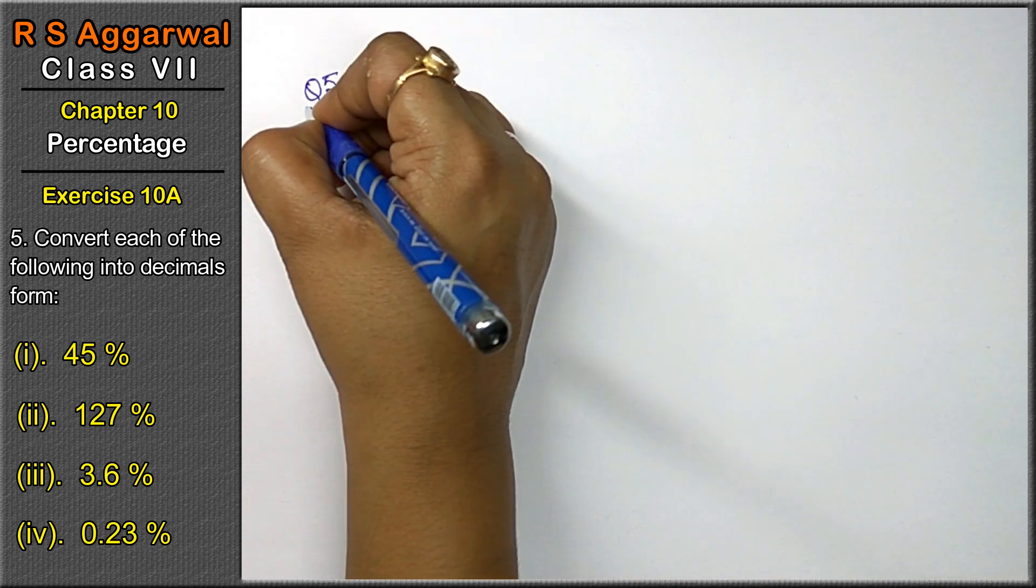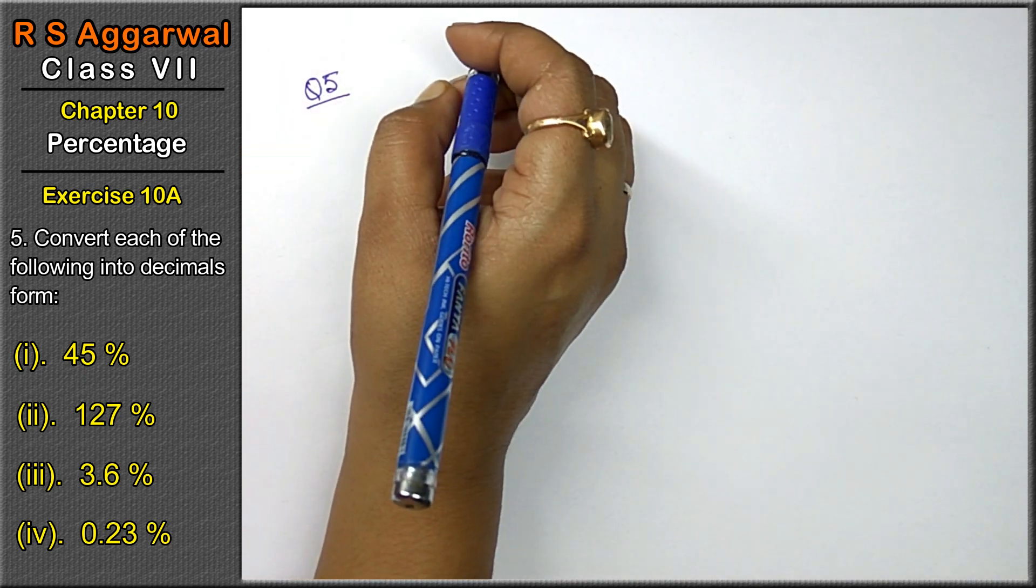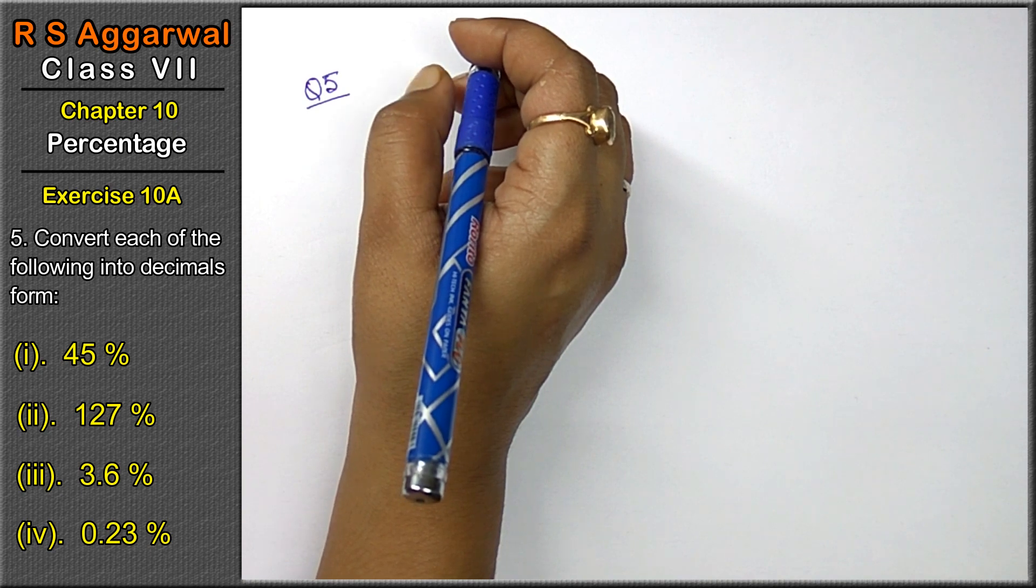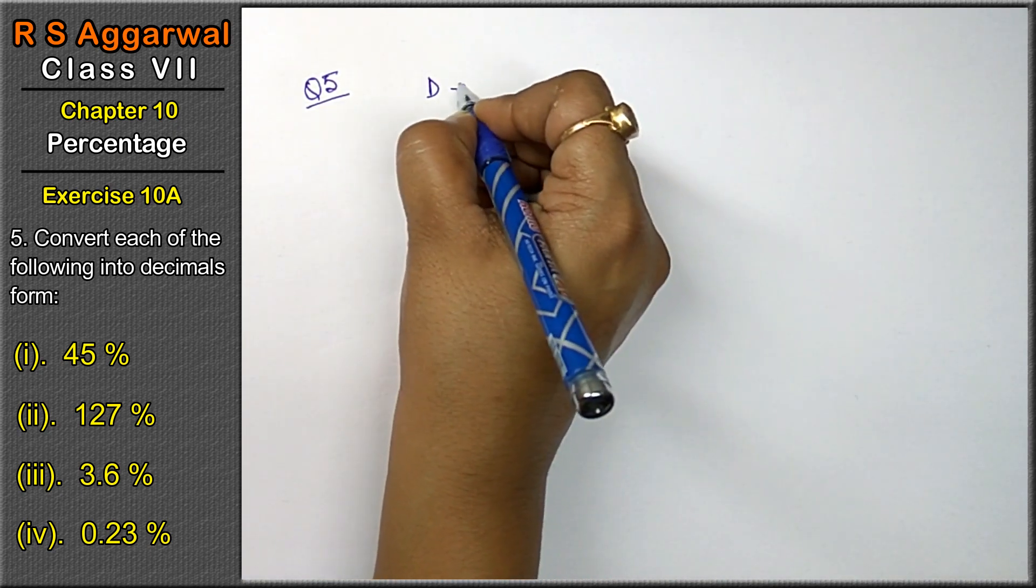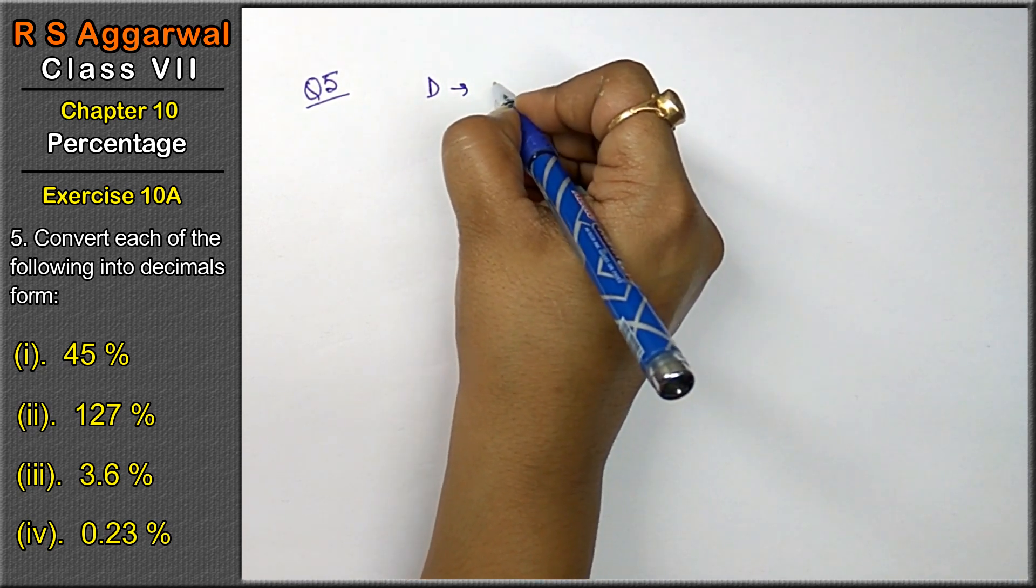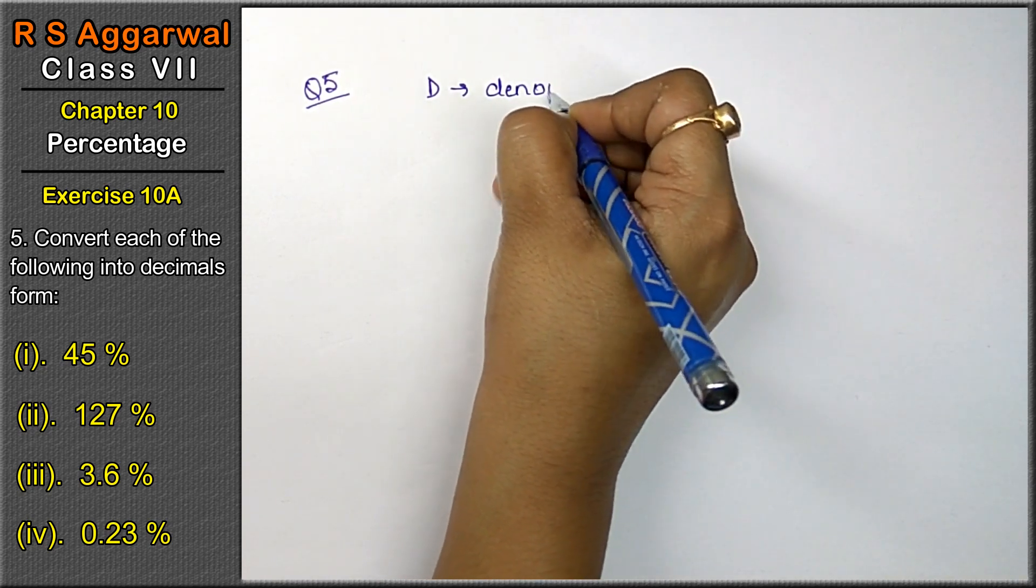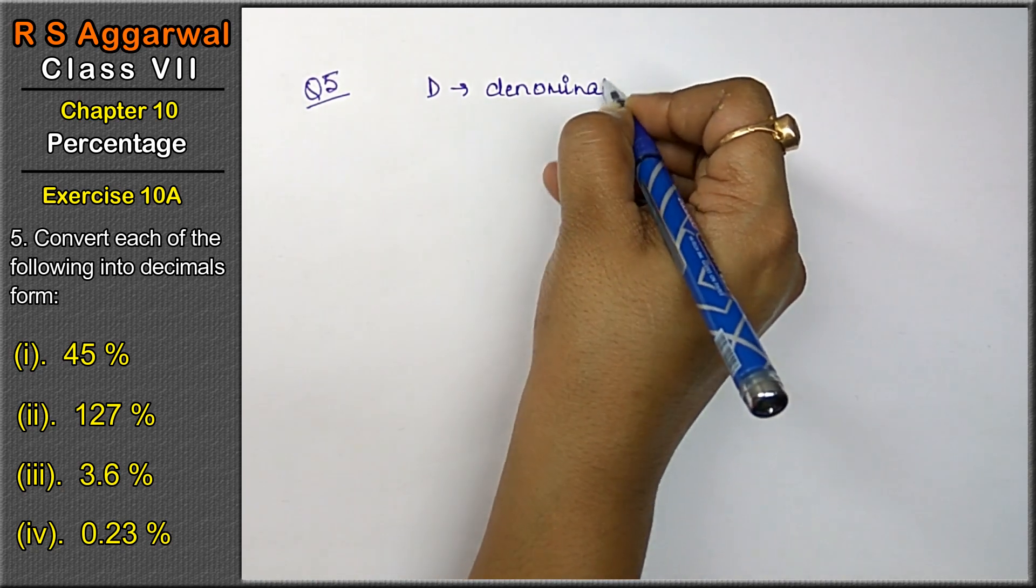Question number 5 is convert each of the following into decimal form. Friends, to change to decimal, count how many zeros are in the denominator.